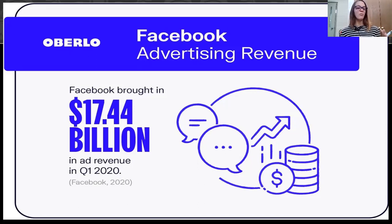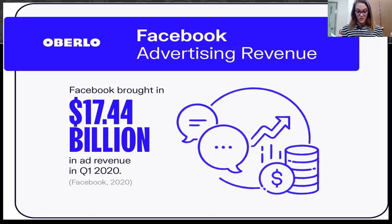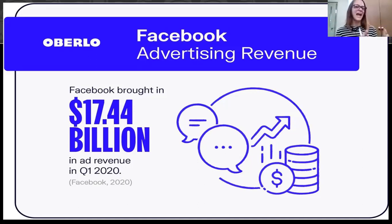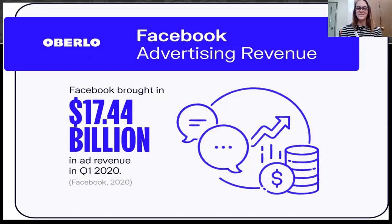There is an awareness worth noting: advertisements are targeted to certain people based on a lot of things — based on your demographic, how old you are, what things you have listed that you are interested in. It could even tie into a Google search that you made, and all of a sudden you might be getting advertisements targeted to you. Facebook has a lot of influence over users, which is why so many people use it for marketing.